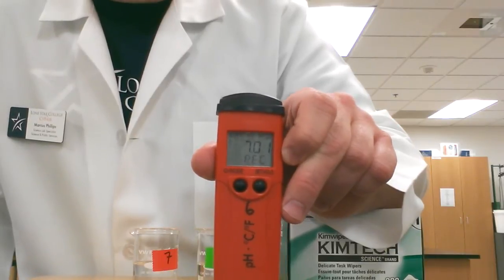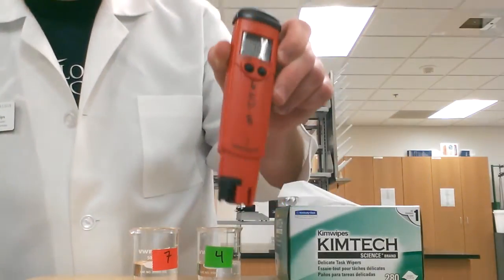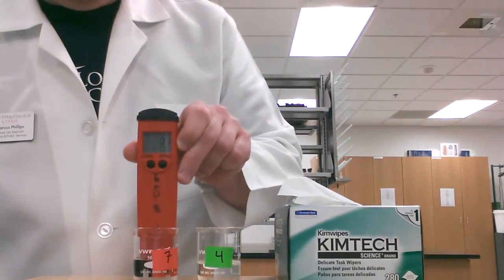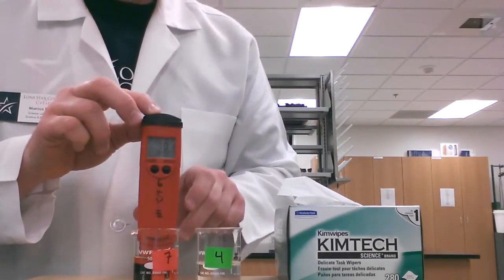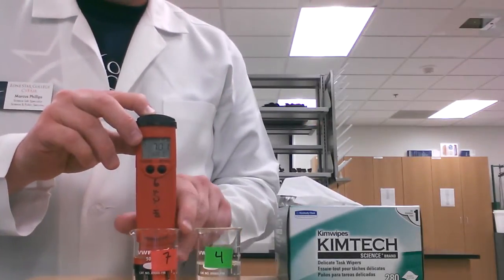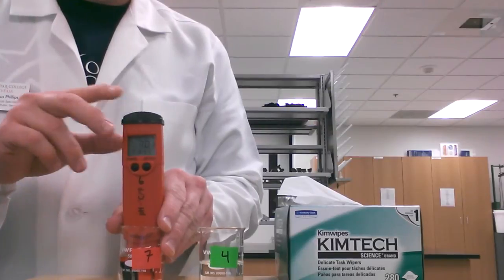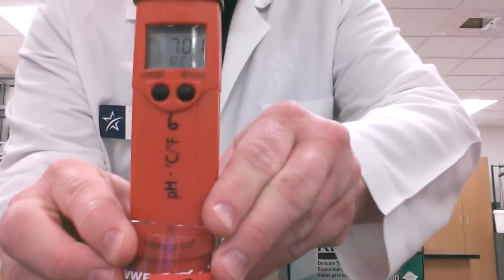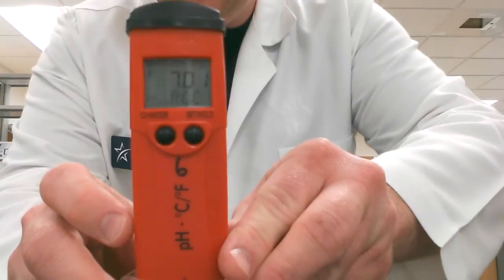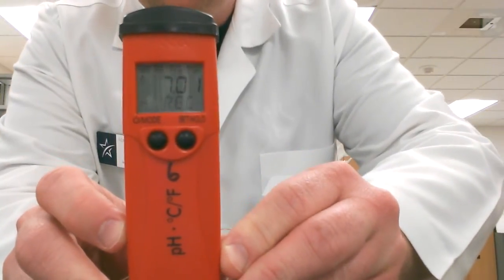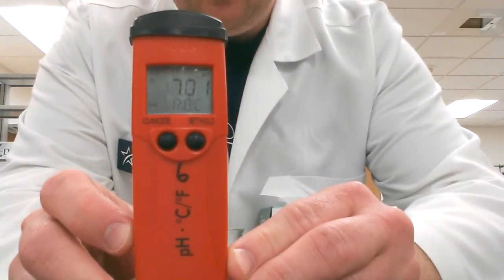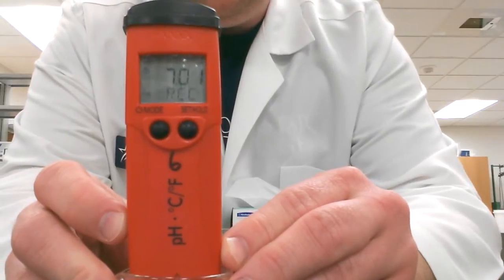When you see that, that's going to tell you to put it into the pH 7 solution, so we're going to do that here. So this is calibrating to the pH 7 solution. This may take 30 to 45 seconds.